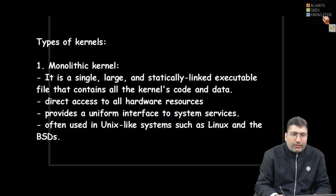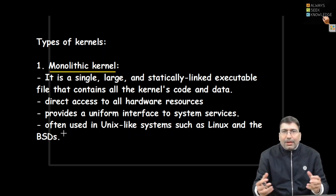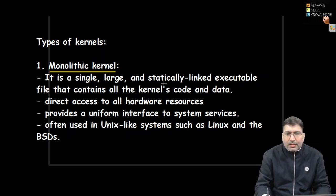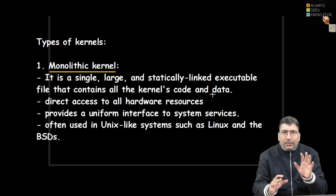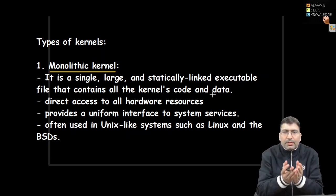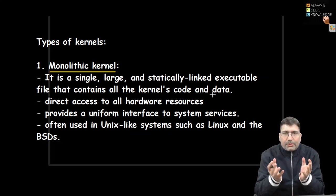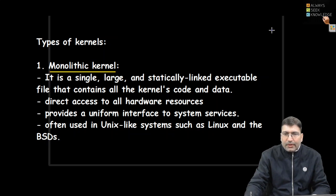There are different types of kernels. The first type is the monolithic kernel — as the term suggests, monolithic means it connects all the modules. It is a single large and statically linked executable file that contains all the kernel code and data. All the modules for file management, memory management, process management, and device management in a monolithic kernel are statically linked or connected. There are two spaces in RAM when we load the operating system: the kernel resident portion and the user space.